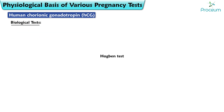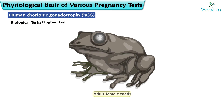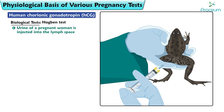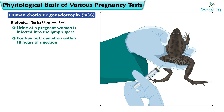Hogben Test: Adult female toads are used for the experiment. The urine of a pregnant woman is injected into the lymph space. Positivity is indicated by ovulation within 18 hours of injection.